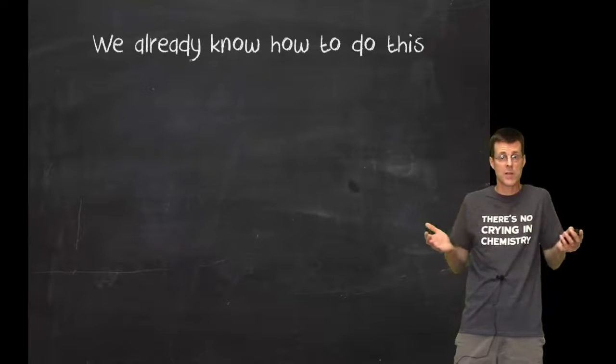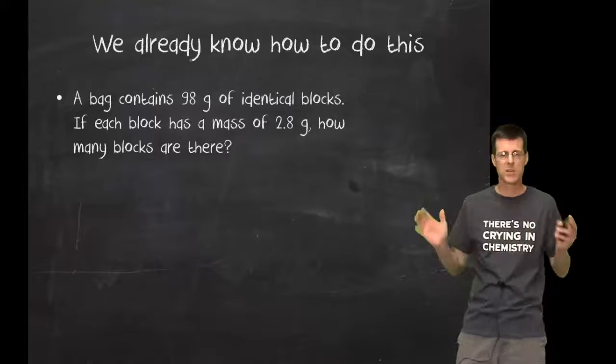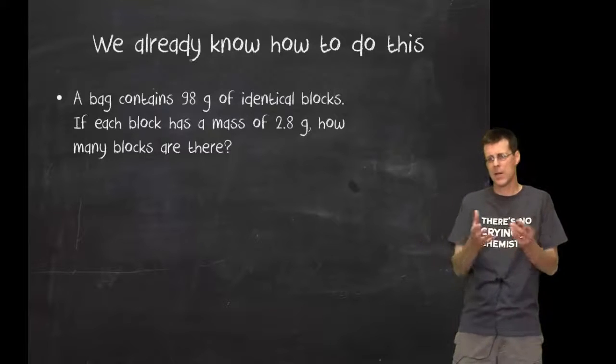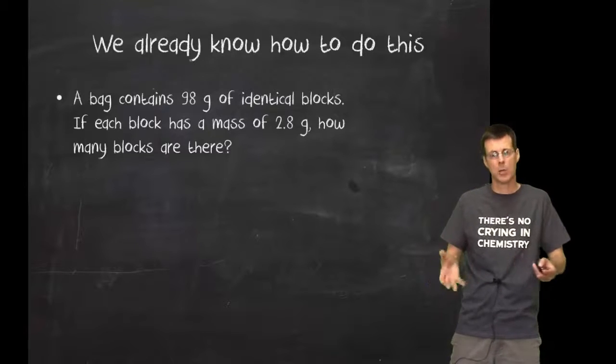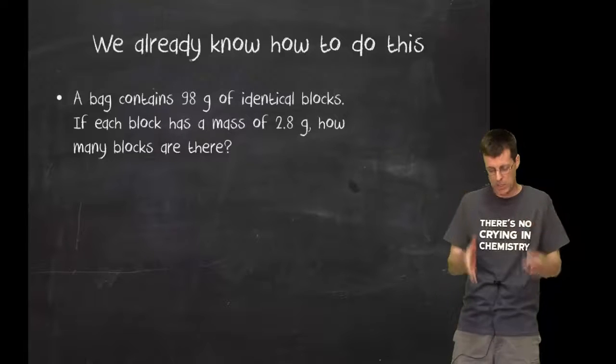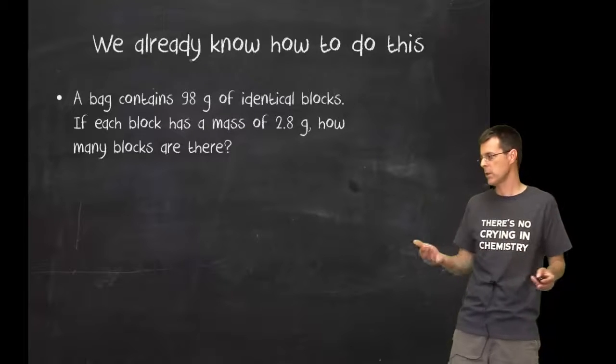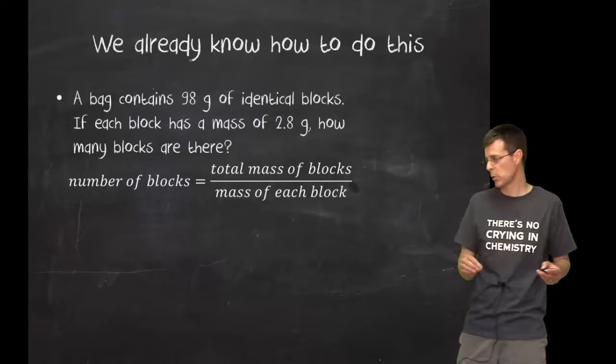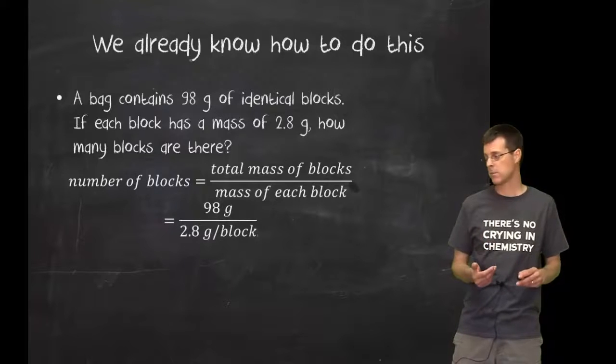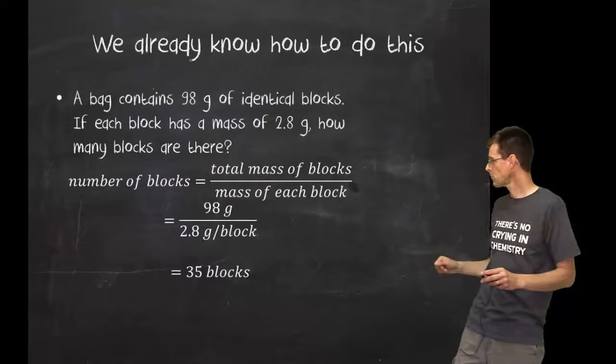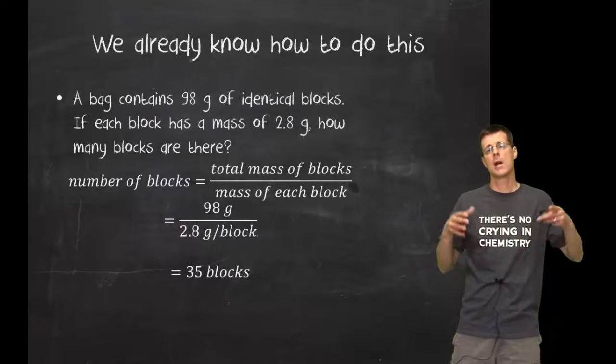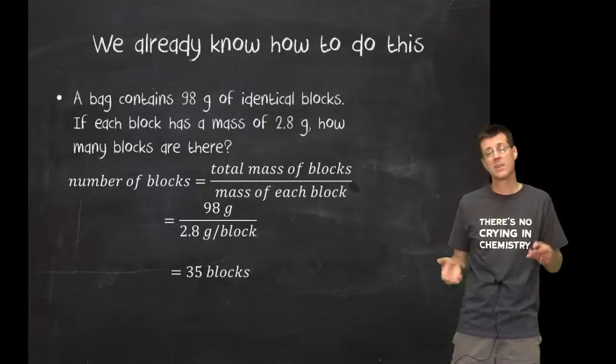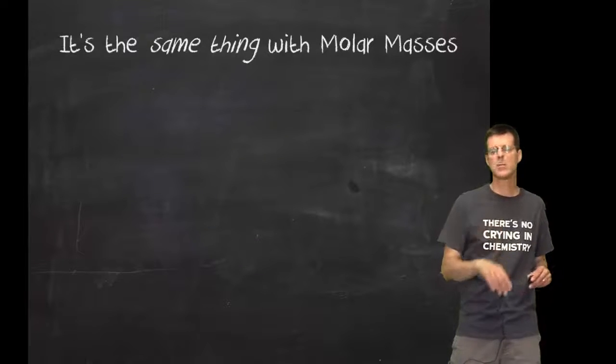We already know. That's awesome. If I gave you this question, it has nothing to do with chemistry. You can pause it if you want, but I really want you to think about how you would solve this. I've got a big bag of blocks, there's my problem, and I know the mass of each block, and they're all the same thing. Well, I take the total mass of blocks, 98, divided by the mass of each individual block, 2.8, and I figure out how many blocks I have. Too easy.